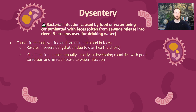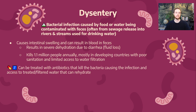Dysentery is especially problematic for young children because their bodies are smaller and retain less water, so constant diarrhea leads to severe dehydration. It kills 1.1 million people annually, mostly in developing nations with poor sanitation where drinking water is contaminated with human sewage. This is why so many philanthropists, epidemiologists, and environmental scientists are focused on expanding clean water access and filtration devices — that's one of the main ways to prevent dysentery.